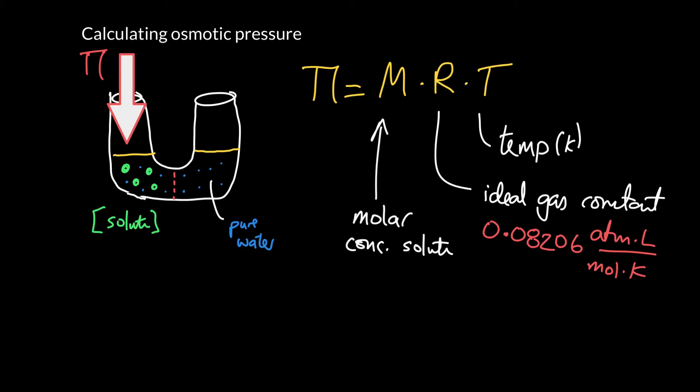In fact, you can see the units work out really well here because if you multiply your temperature in Kelvin, it cancels that out. Your molar concentration is moles per liter, so liters over moles will cancel, and you're left with atmospheres at the end of the day. So the osmotic pressure calculation, if you use this gas constant, will give you an osmotic pressure in terms of atmospheres.